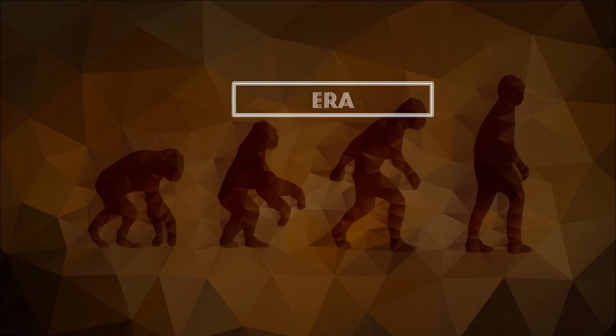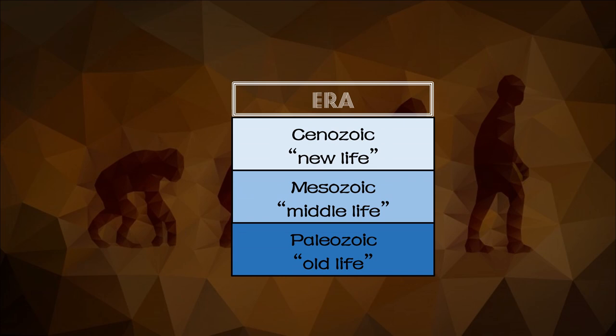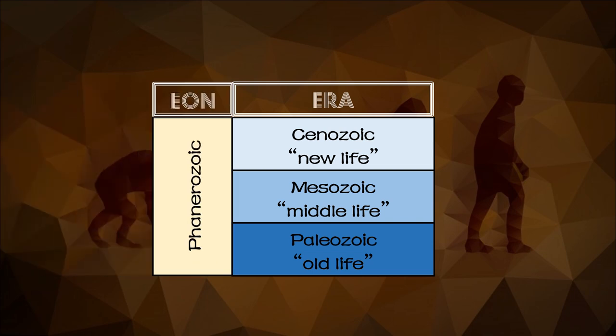We move on to eras. Eras are the next largest interval unit. Eras encompass major intervals of time and are defined based on the fossilized forms found in the rock layers and the law of superposition. The Hadean, Archean, and Proterozoic aeons do not have recognized eras. Only the Paleozoic era, Mesozoic era, and Cenozoic era exist under the Phanerozoic aeon. The Cenozoic is known as new life, Mesozoic as middle life, and Paleozoic as old life. Each of the names of the eras reflects the relative stage in the development of life.